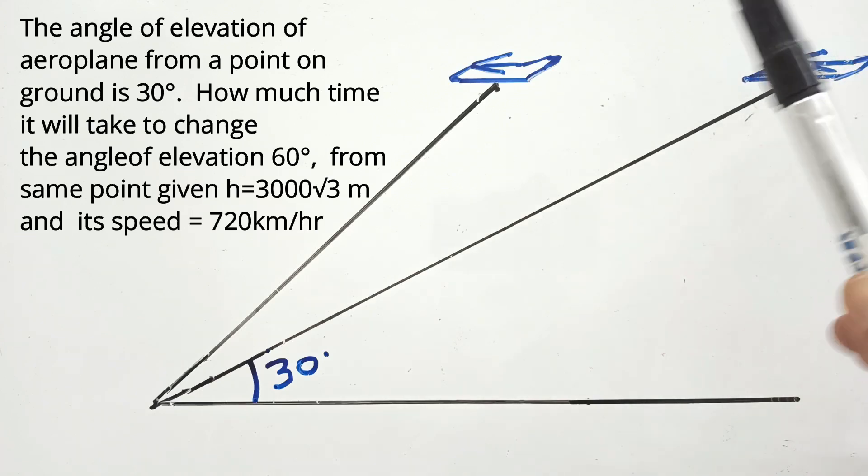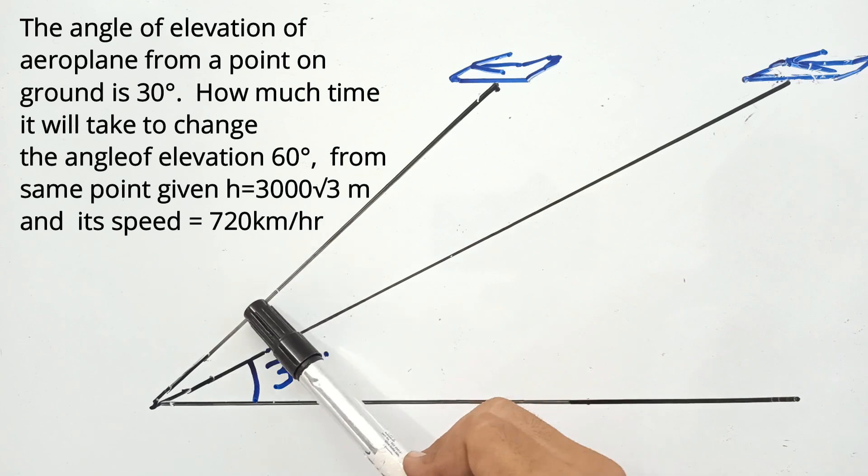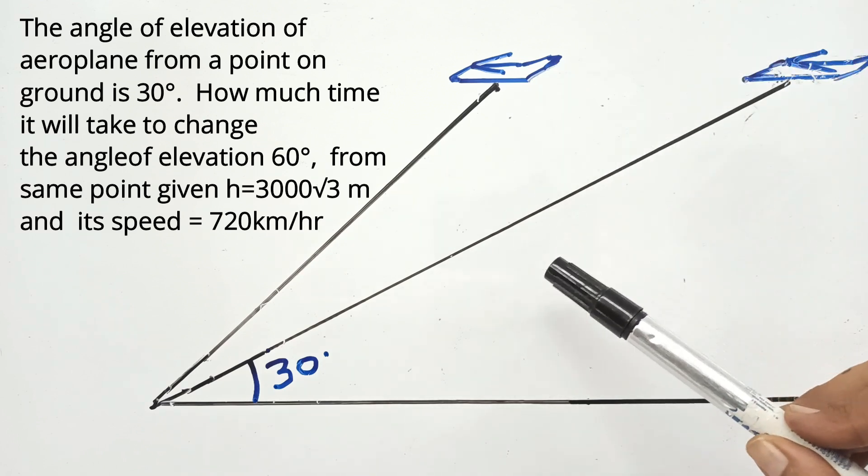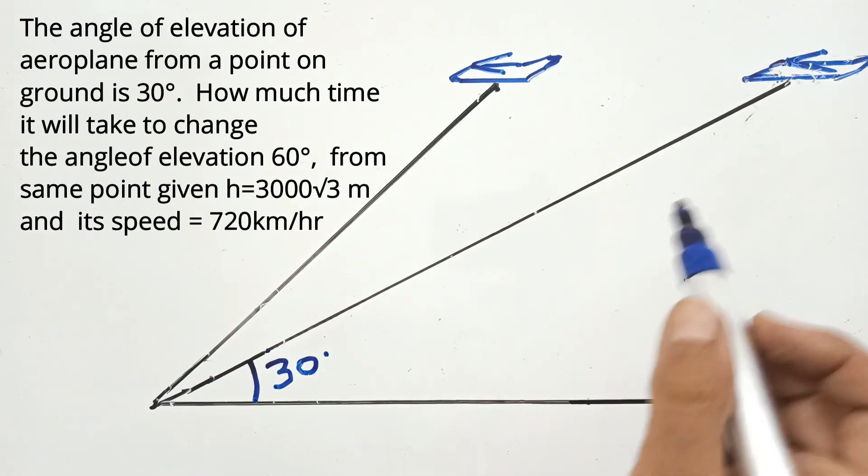The angle of elevation of the aeroplane from a point on the ground is 30 degrees. How much time will it take to change the angle of elevation to 60 degrees from the same point, given h=3000√3 meters and its speed is 720 km/hr?